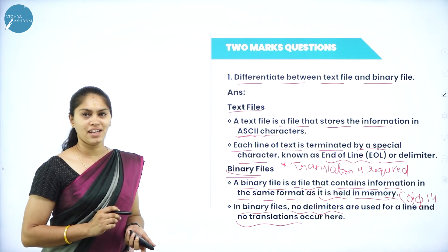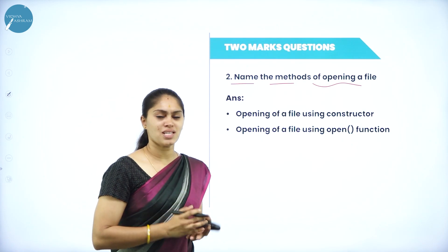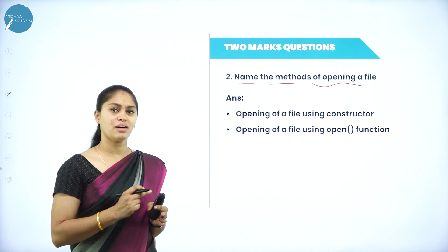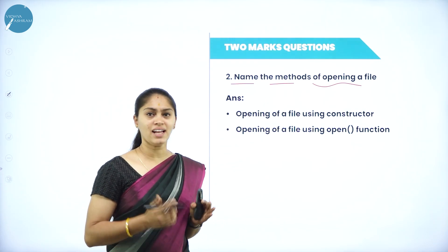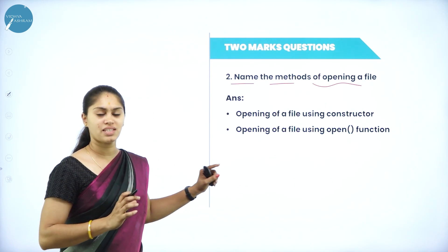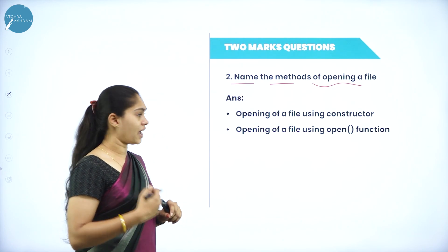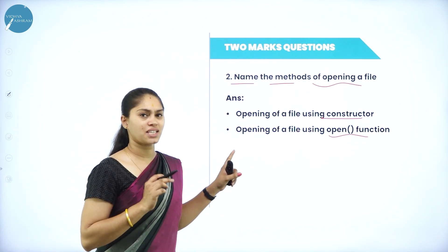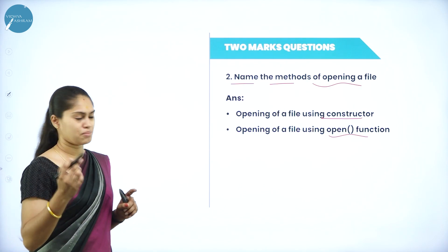The next question is: name the methods of opening a file. Students must distinguish between methods and modes — they are different. Methods of opening a file are: by using a constructor, and by using the open member function. When they ask for modes of opening a file, you have to write a tabular column listing the mode parameters used with the open member function. This is a frequently asked question.